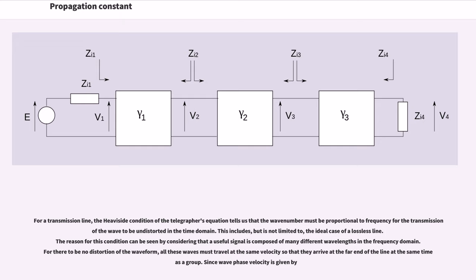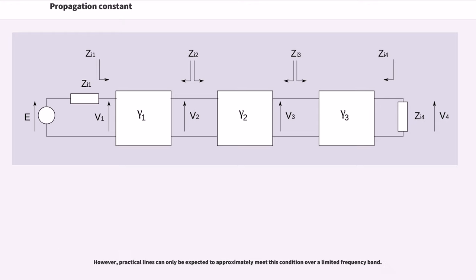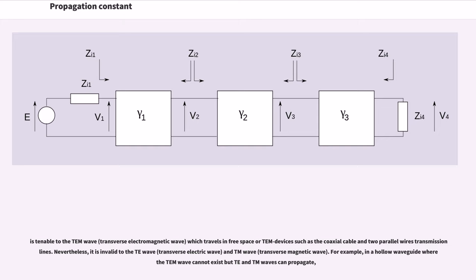Since wave phase velocity is given by v = omega/beta, it is proved that beta is required to be proportional to omega. In terms of primary coefficients of the line, this yields from the telegrapher's equation for a distortionless line the condition R/L = G/C. However, practical lines can only be expected to approximately meet this condition over a limited frequency band. In particular, the phase constant beta is not always equivalent to the wave number k. Generally speaking, the following relation is tenable to the TEM wave which travels in free space or TEM devices such as the coaxial cable and two parallel wires transmission lines. Nevertheless, it is invalid for the TE wave and TM wave. For example, in a hollow waveguide where the TEM wave cannot exist but TE and TM waves can propagate.